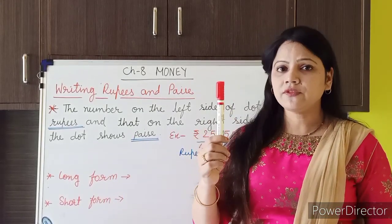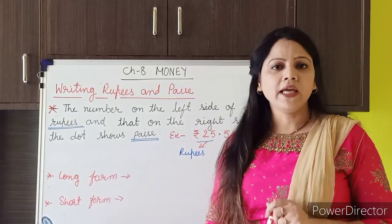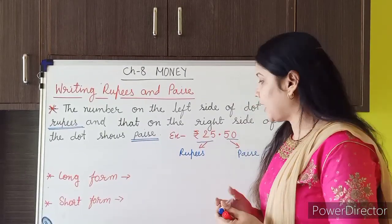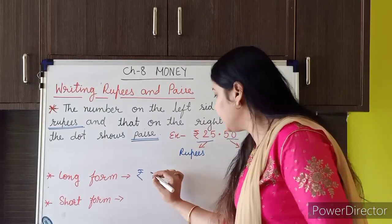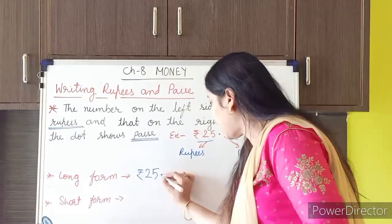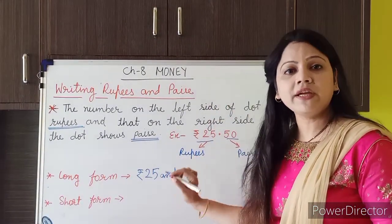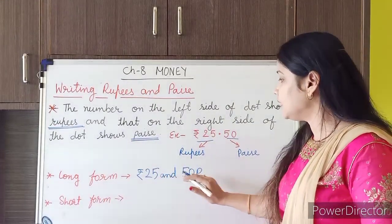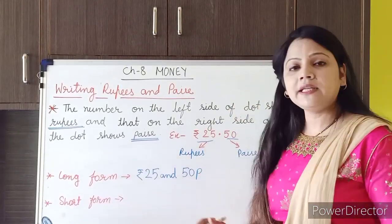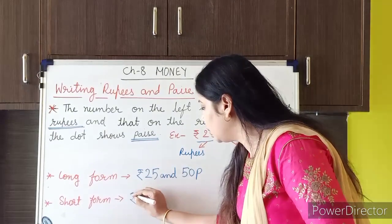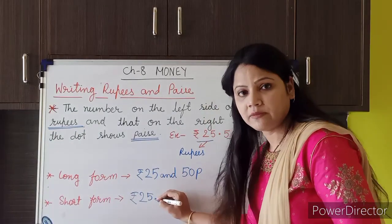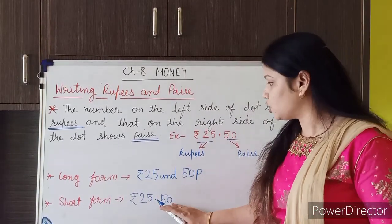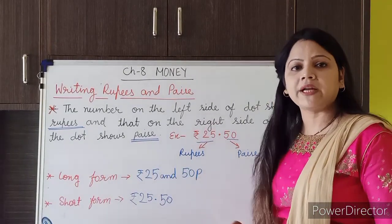Now I am going to discuss how to write rupees and paise in long form and short form. The cost of this marker is 25 rupees and 50 paise. In long form, we write: rupees symbol, then 25, then 'and', then 50, then the paise symbol. In short form, we write: rupees 25 dot 50 — and if we use the dot, we don't need to write the paise symbol. This is the long form and short form of writing rupees and paise.